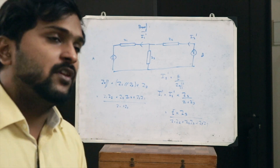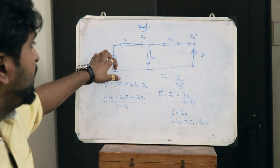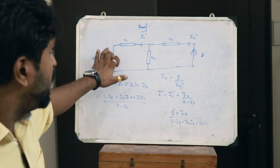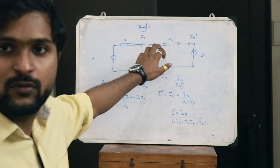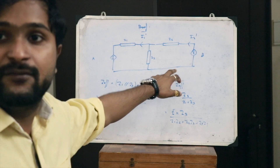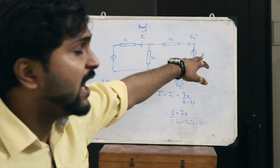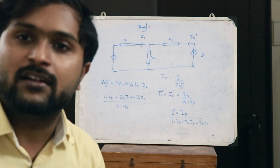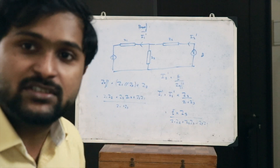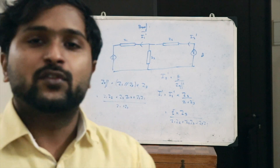Hence we have proved the reciprocity theorem, which states that when a particular EMF is applied at the terminals of one antenna and a current is obtained at the terminals of another antenna, then if the same EMF is applied to the second antenna, the same value of current is measured at the first antenna. This therefore sums up the reciprocity theorem. Thank you.